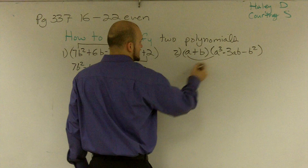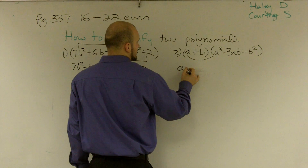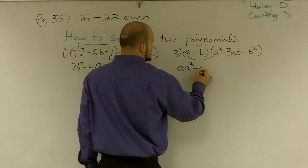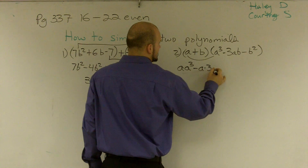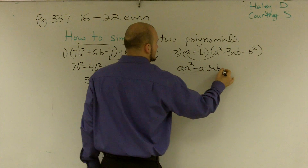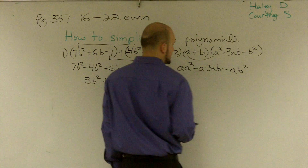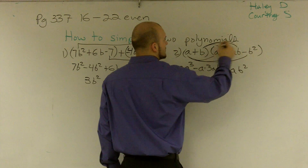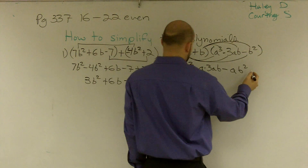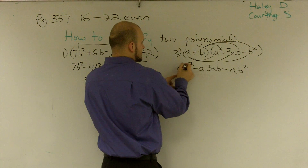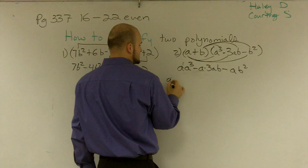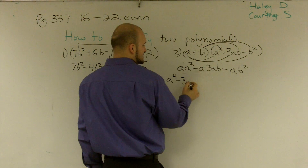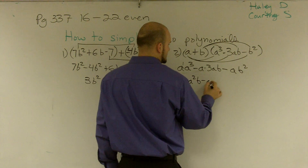I'm going to write it out. I'm going to do a times a cubed, minus a times 3ab, minus a times b squared. Then I'll do the same with b. Simplifying: a times a to the first times a to the third is a to the fourth. Minus 3 times a times a is negative 3a squared b, minus ab squared.